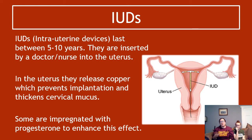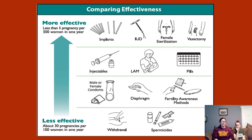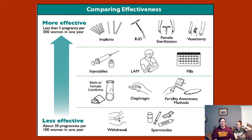IUD stands for intrauterine device — it's a thing that's put into the uterus. Looking at a diagram comparing effectiveness: withdrawal is the least effective method, and spermicides aren't very effective either. The most effective methods are implants and IUDs because they don't require you to remember to take a pill or use a condom. Female sterilisation and vasectomy are also very effective because it physically can't get there anymore.